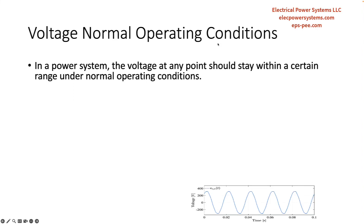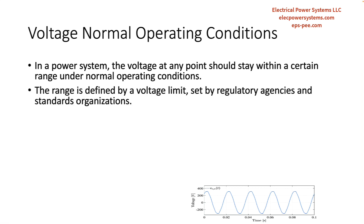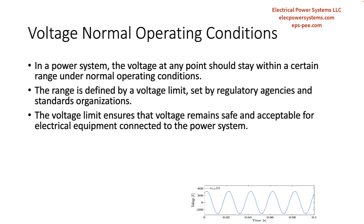In a power system, the voltage at any point is expected to remain within a certain range under normal operating conditions. This range is typically defined by a voltage limit, which is specified by regulatory agencies and standards organizations. The voltage limit ensures that the voltage remains within safe and acceptable levels, so that the electrical equipment connected to the power system can operate properly.